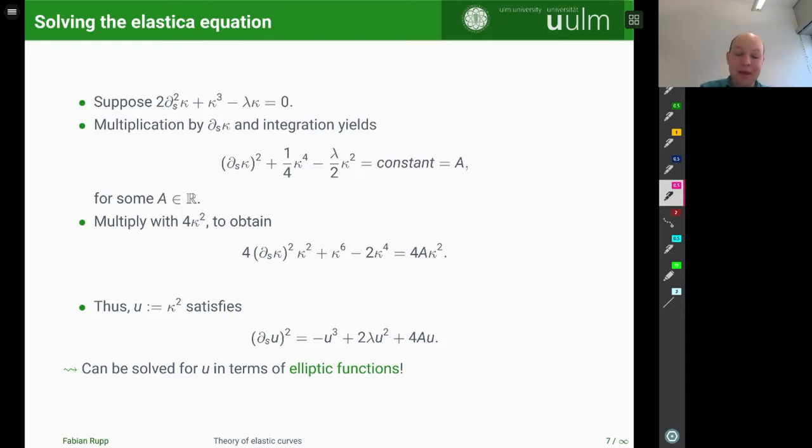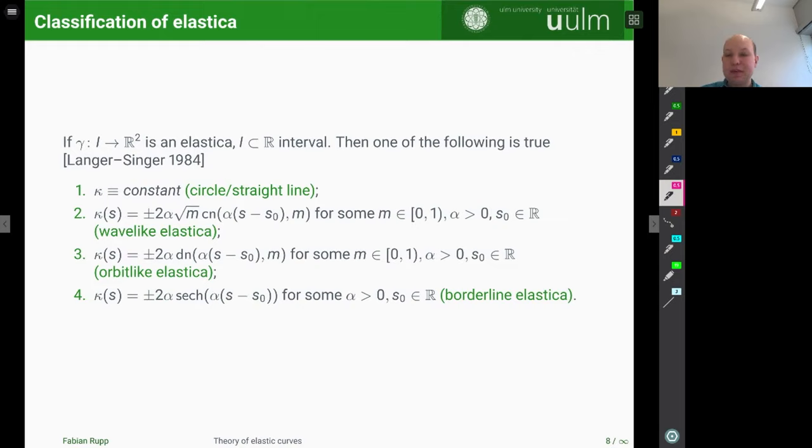So if we now make a substitution and call κ squared u, the equation just becomes d_s u squared is equal to this third order polynomial in terms of u over here. And one can then show that this can be solved explicitly for u in terms of elliptic functions. Well, kind of explicit. And then we have the u which determines the curvature κ. And from that, we can find the curves gamma again by the fundamental theorem of curves, if you want. So this is why this equation can be solved explicitly.